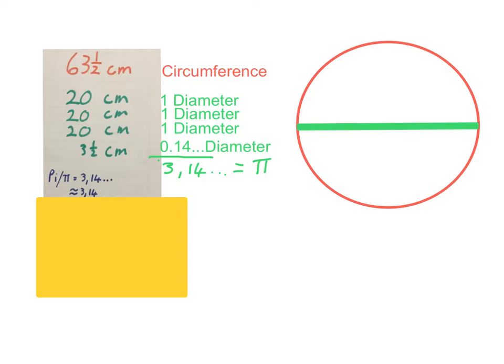In math we are going to round off pi to 3.14 like I did here or to 22 over 7 or we're going to use pi himself on the calculator.